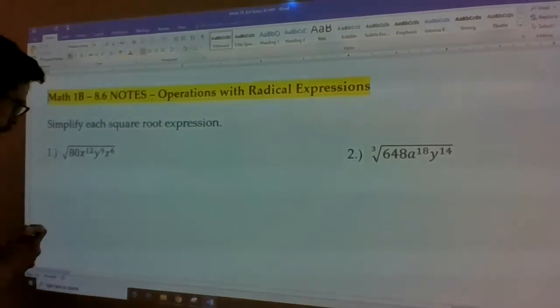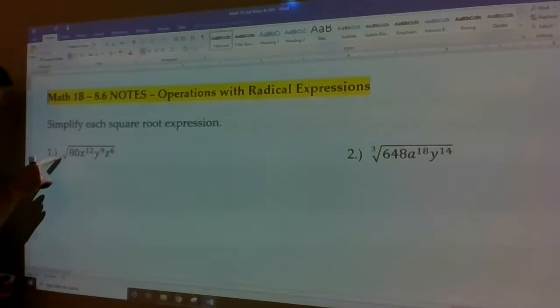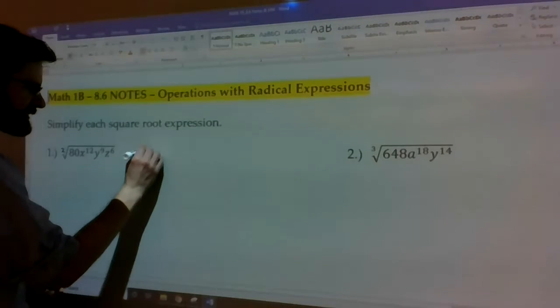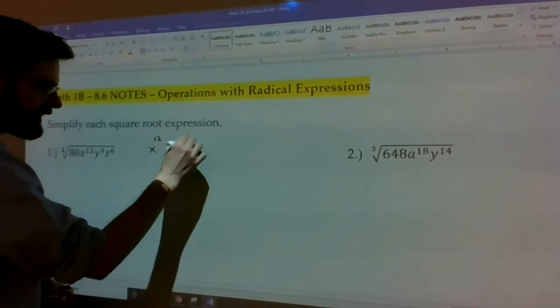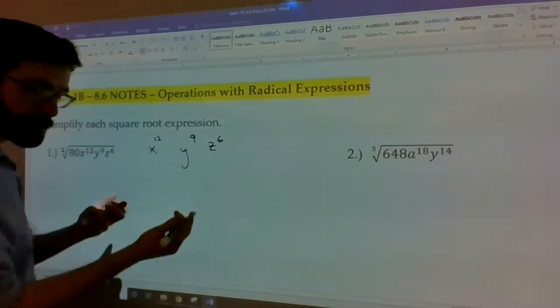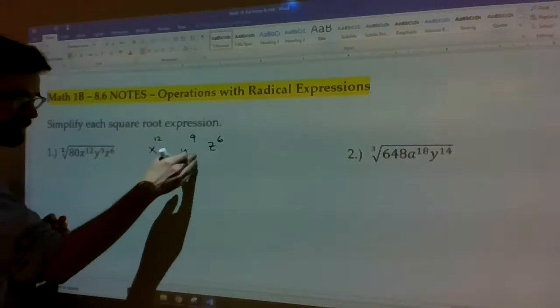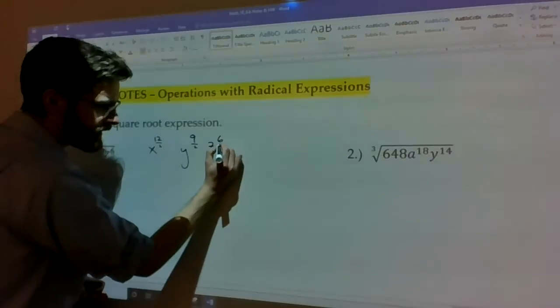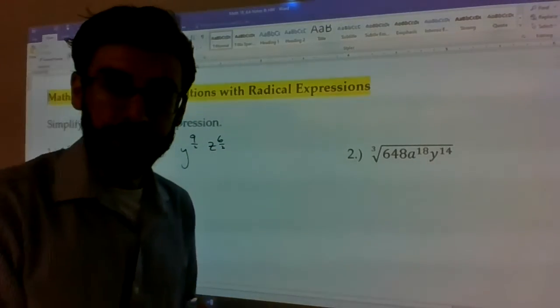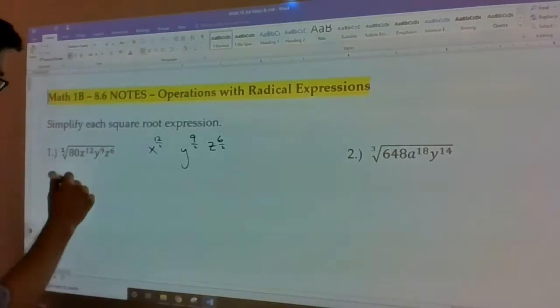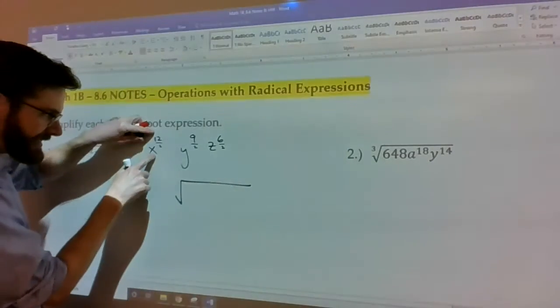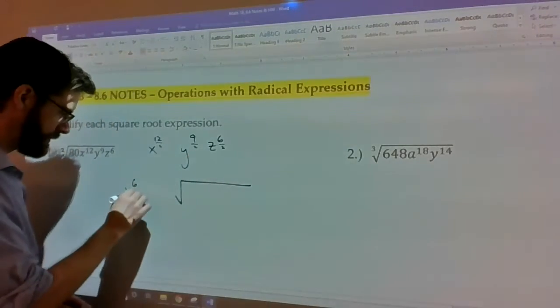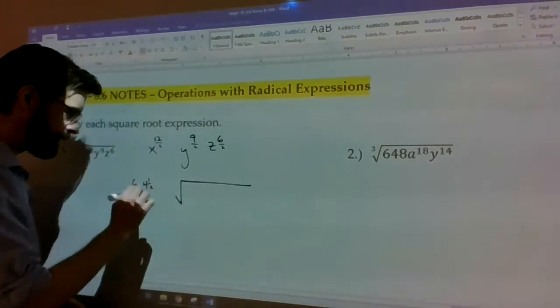So number one, we learned in 8.5 that if it is a blank root, you have to assume that it's a square root. And that all your variables inside can be reduced by just dividing the power, in fact the little exponent here, by the root. So 12 divided by 2, 9 divided by 2, 6 divided by 2. And those should give you the values of the variables outside of the root.